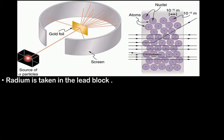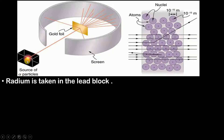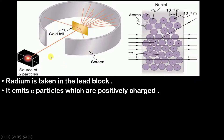Initially we take radium in a lead block. This radium is unstable and it wants to become stable. Therefore it will undergo decomposition and emit alpha particles. You can see this beam of alpha particles — it is emitted because of the radium. These alpha particles are positively charged.